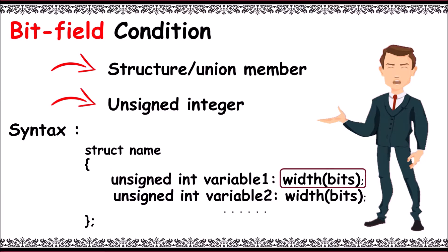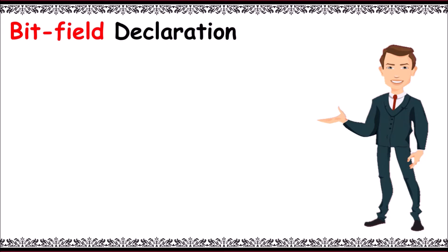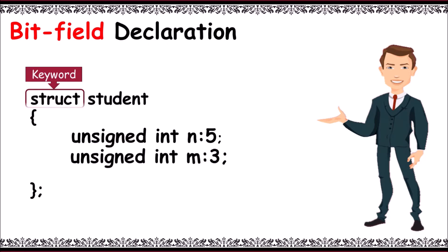Now bitfield declaration is like keyword struct or union, then its name. Unsigned int n with width of 5 bits. Now 5 bits of memory is allocated here for n. Next, unsigned int m with width 3 bit positions, and close the braces.